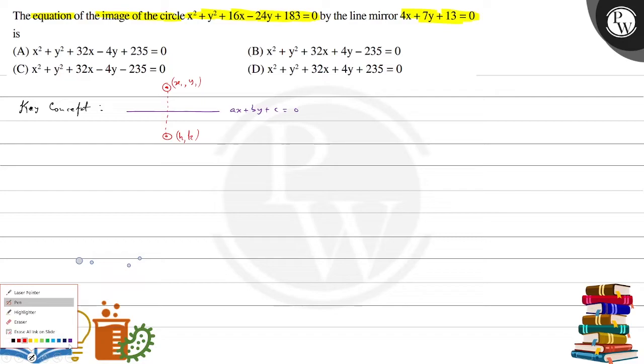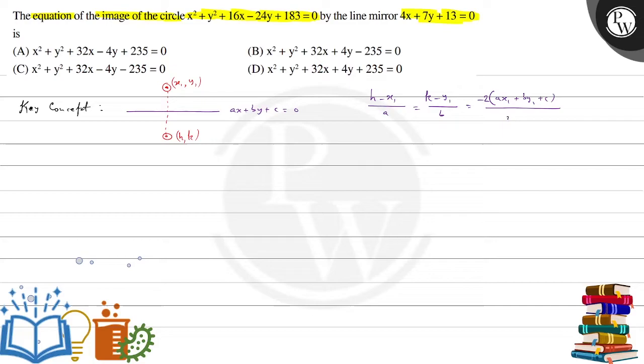directly apply a formula which is given by h minus x1 divided by a, this is equal to k minus y1 divided by b, this is equal to minus, image ke liye hap e 2 a jae ga, ax1 plus by1 plus c divided by a squared plus b squared. Agar ye formula abh use karte ho, toh this problem becomes very easy to solve.